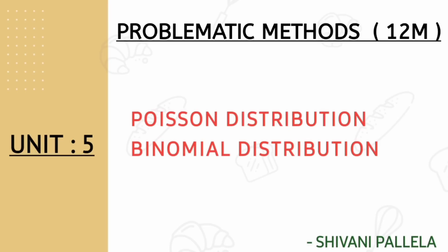From unit number four, Bayes' Theorem is what you are learning from the Probability chapter. In unit number five, Poisson Distribution and Binomial Distribution are there. Poisson Distribution is more important; Binomial Distribution is rarely asked. These are the two problematic things in unit number five.